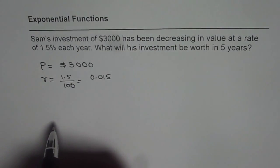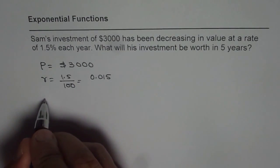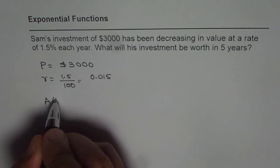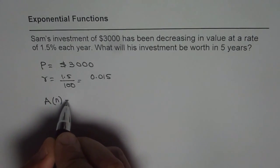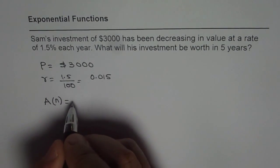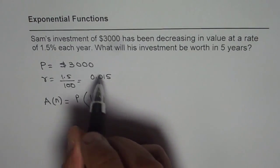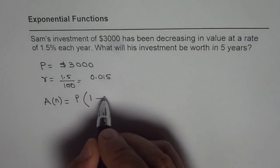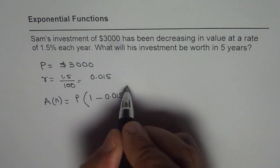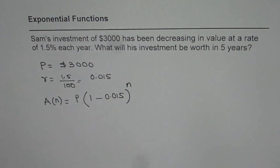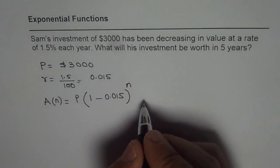Looking into this, at any instance of time, we can say amount after n number of years will be the principal amount times 1 minus 0.015 to the power of n, since it is depreciating at this rate. That becomes the amount after any fixed time period.